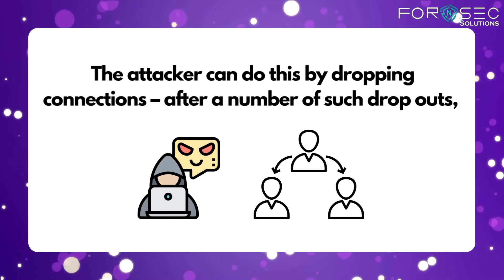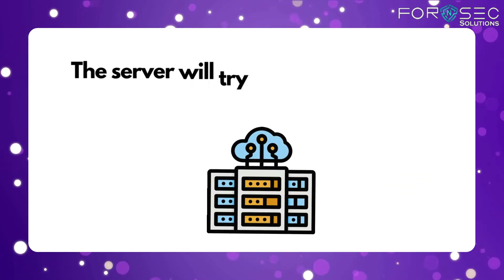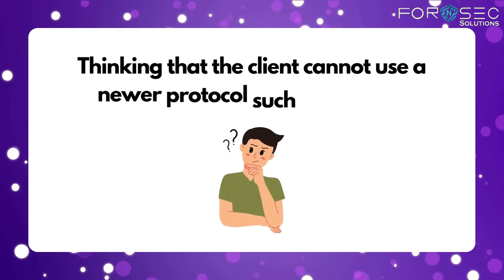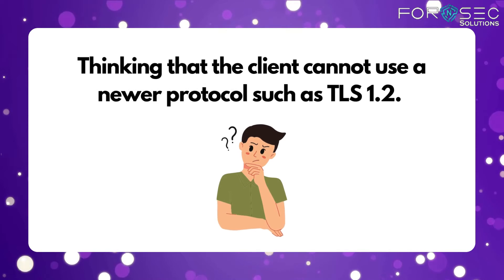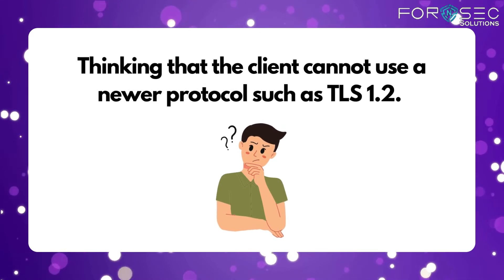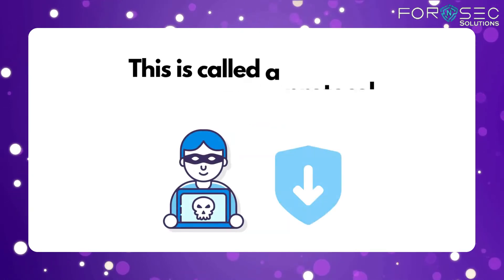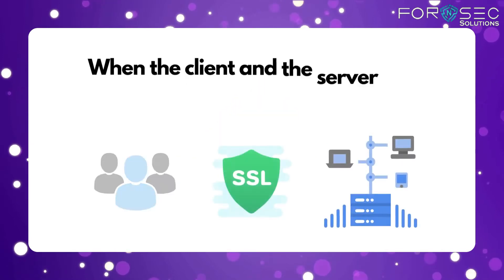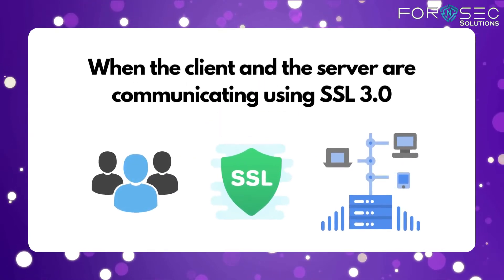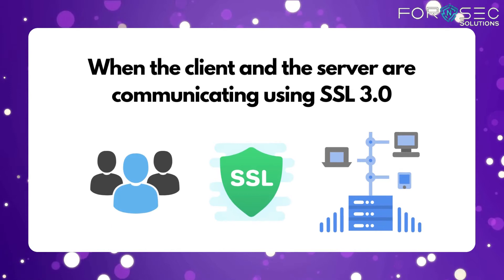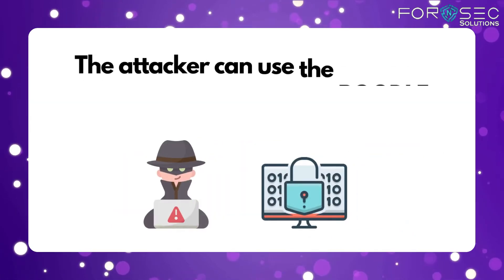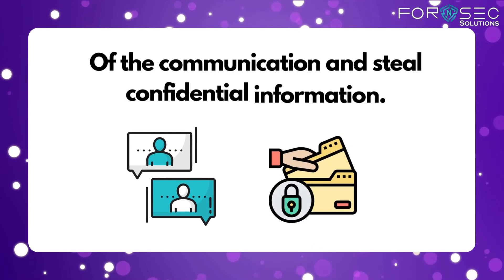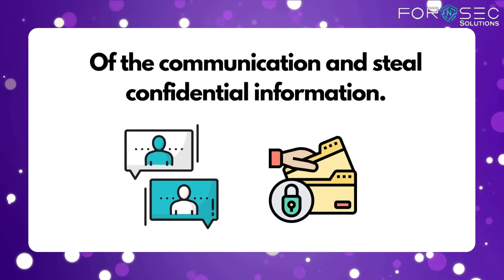After a number of such dropouts, the server will try an older protocol thinking that the client cannot use a newer protocol such as TLS 1.2. This is called a protocol downgrade attack. When the client and server are communicating using SSL 3.0, the attacker can use the Poodle attack to decrypt selected parts of the communication and steal confidential information.